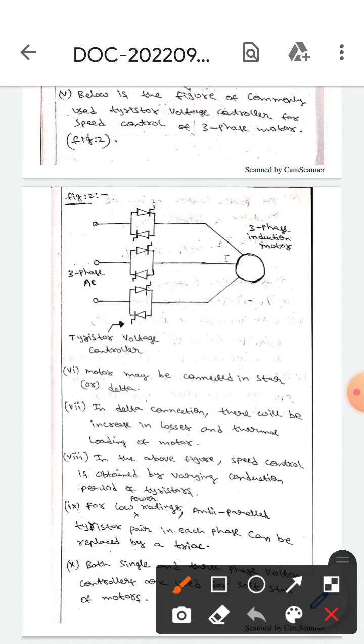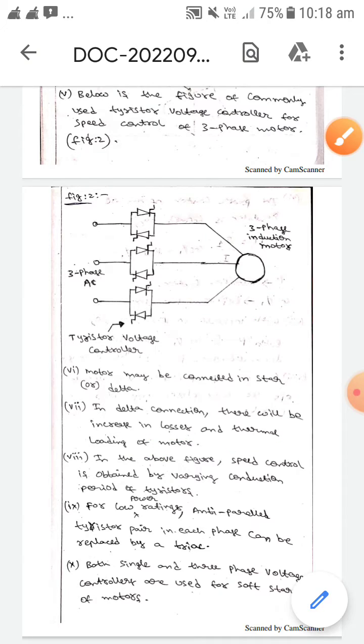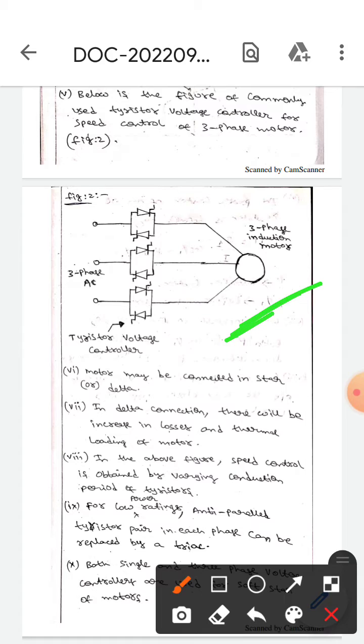In this, the motor can be connected in star or delta. In delta connection there will be increase in losses and thermal loading of motor. In the above figure, speed control is obtained by varying the conduction period of these thyristors.